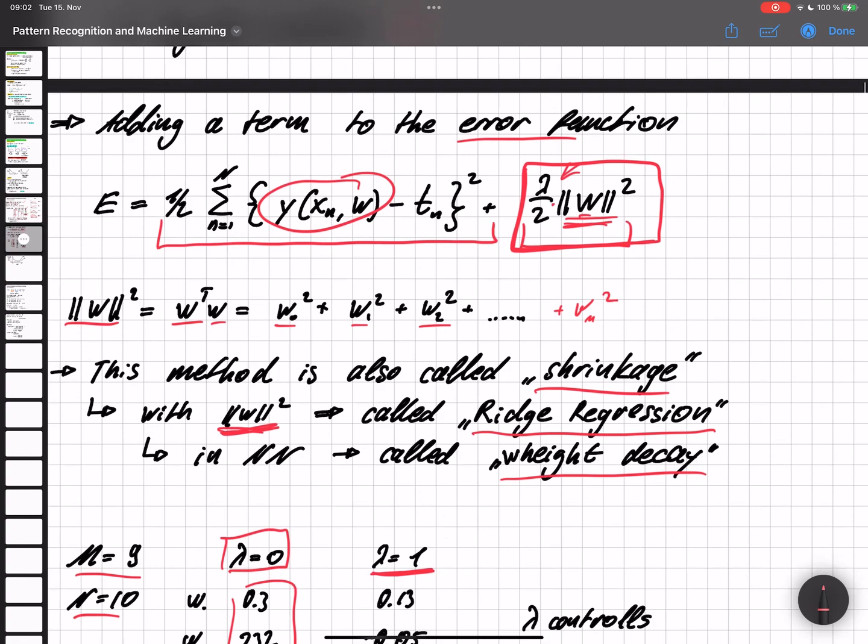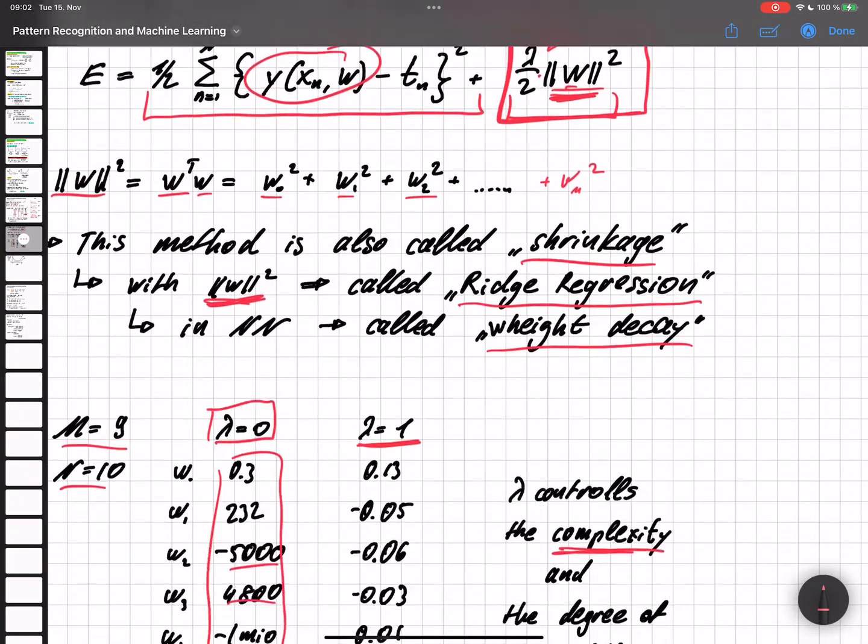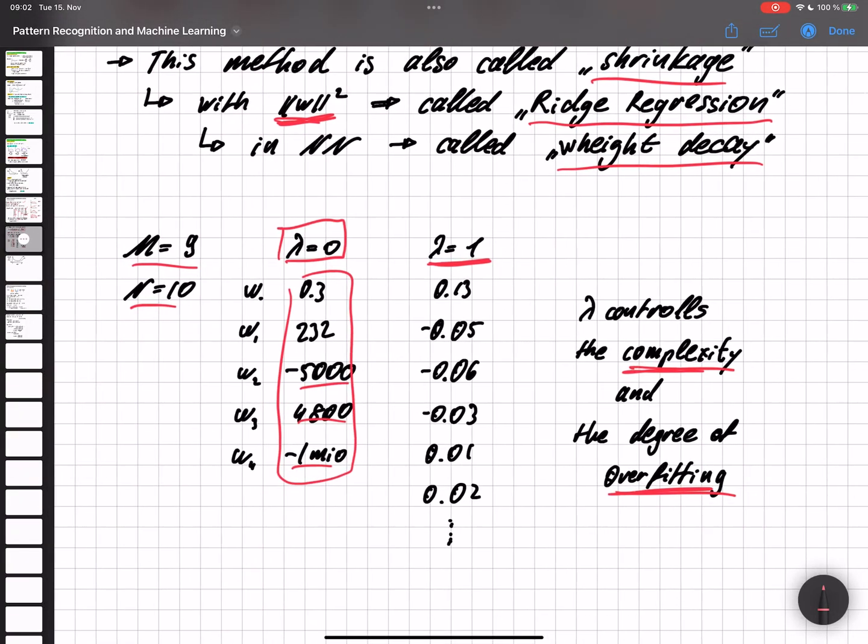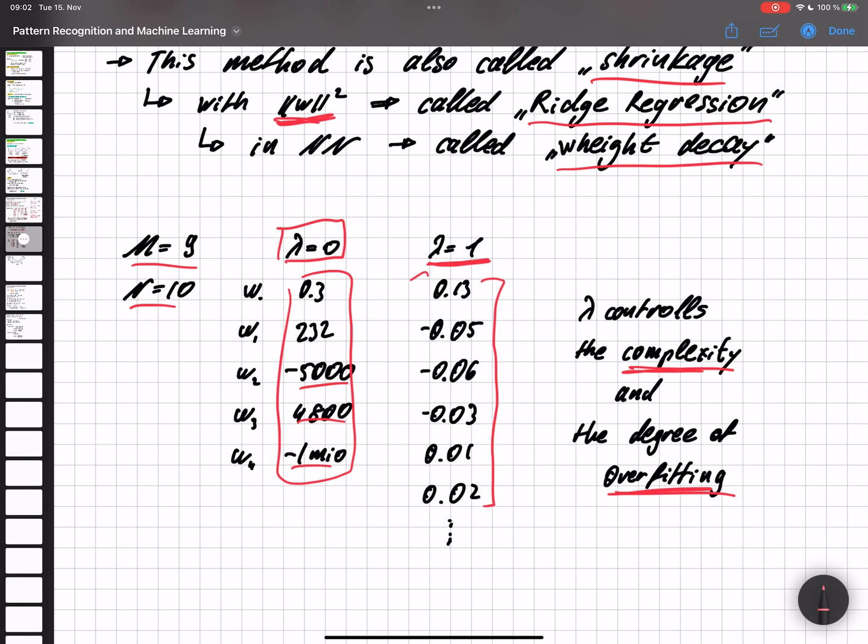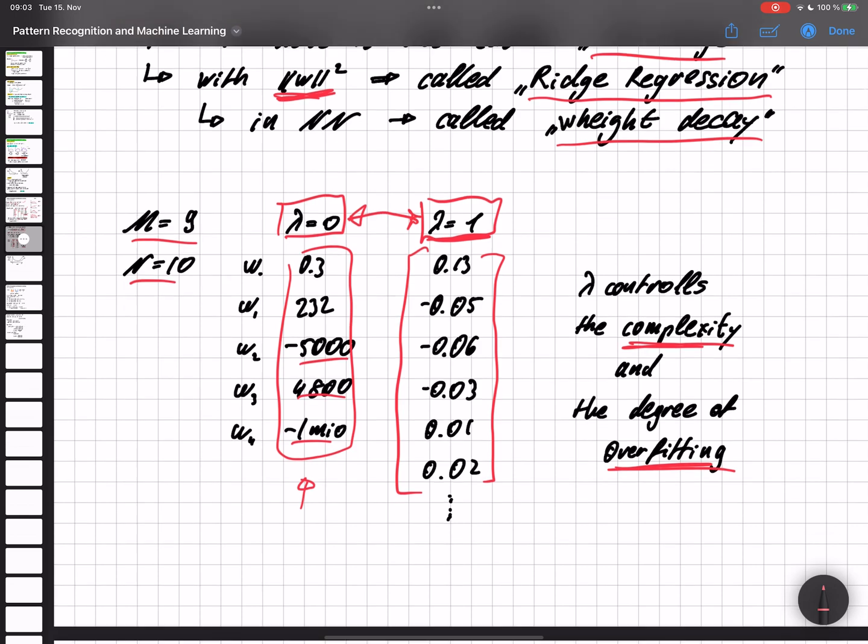If we set lambda to one, so we have one half times the length of the vector, we get values that are fairly close to zero. And now we have to look at where in this range between zero and one do we set the value of lambda, because we don't want everything to be zero, but we also do not want the values to be extremely large.